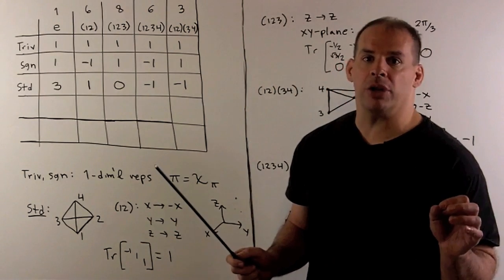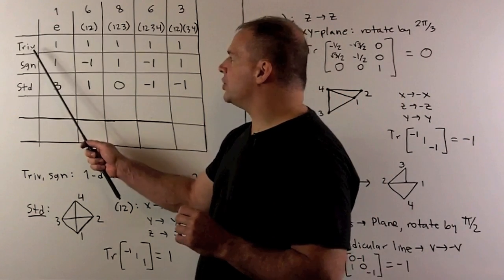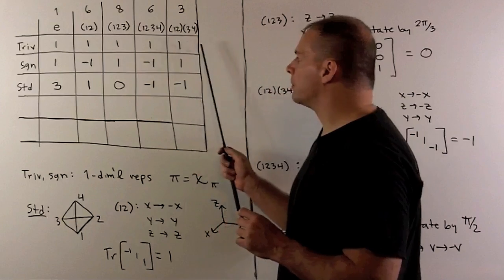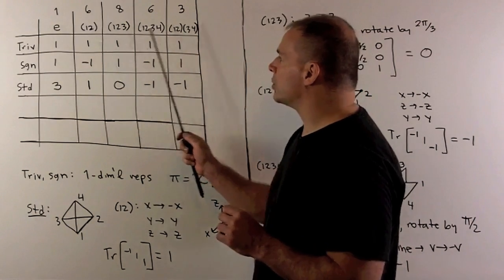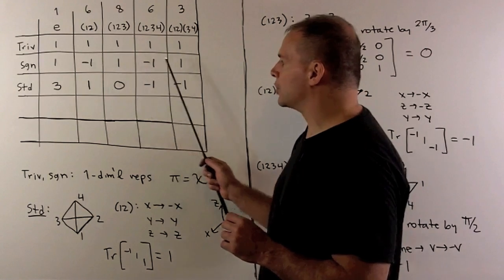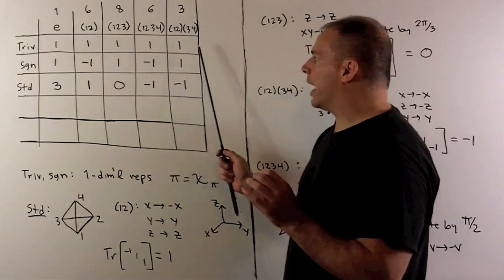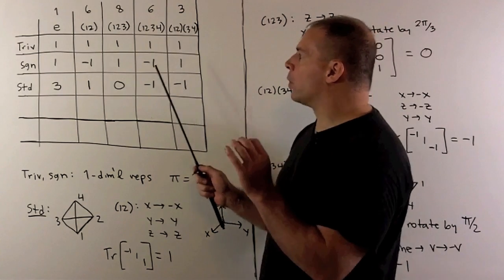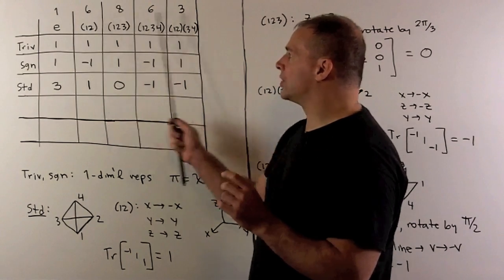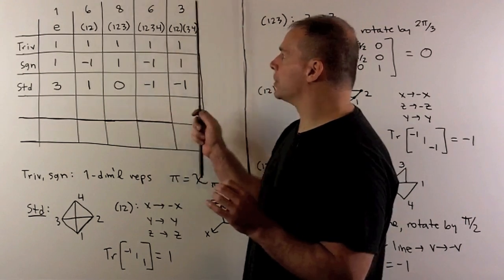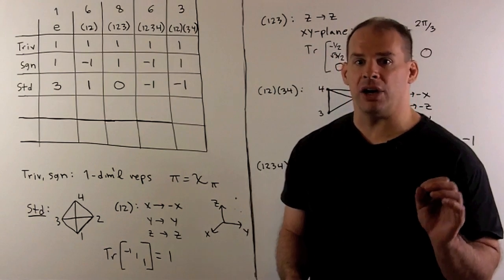Because these representations are one-dimensional, the representation equals its character. For the trivial representation, we just have a row of ones. For the sign representation, we have a row of ones except for the two-cycles and four-cycles, where we get minus one. Taking the weighted sum of the squares gives 24 in each case. Multiplying the first two rows together and taking the weighted sum gives one plus eight plus three minus six minus six equals zero, so Schur orthogonality checks out.